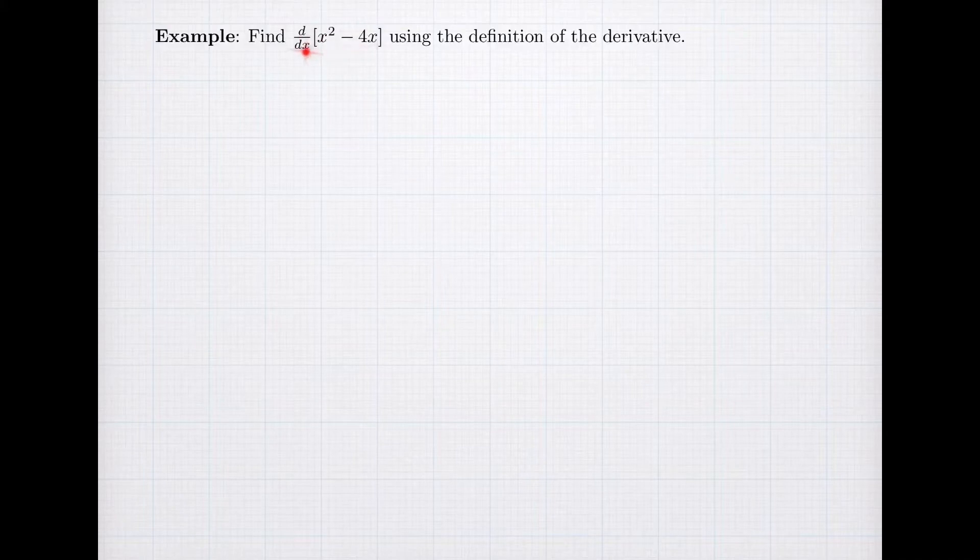So we're interested in finding the derivative d/dx, the derivative operator, of the function x squared minus 4x. And we're asked to use the definition of the derivative, which means we can't just use a simple formula. We need to go back to first principles.